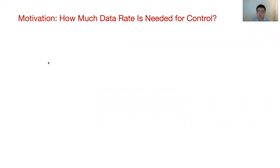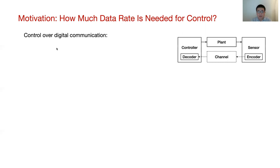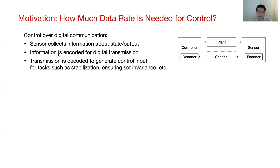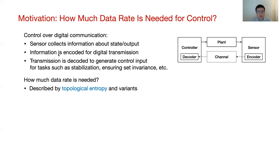Our interest in topological entropy is strongly motivated by the question of how much data rate is needed for control over communication. Here is a basic diagram for feedback control over a digital communication channel. In this control system, the sensor collects information about the state or output of the plant. This information needs to be encoded before it can be transmitted through the digital channel, and the received transmission needs to be decoded to generate control input for tasks such as stabilization or ensuring state invariance. An important question is how much data rate is needed for feedback stabilization or other control tasks.